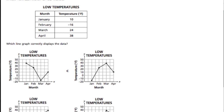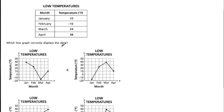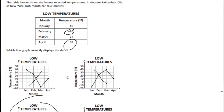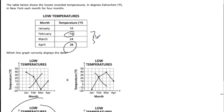Here we have a line graph with temperatures, and they want us to connect the graph to the table. I'll note that February should be the coldest and April should be the highest. One option is out because February is too high. Another is out because February should be the lowest. The correct one has February as the lowest and April as the highest. One more is out because April is lower than March. The range — the highest minus the lowest — is a very useful tool.